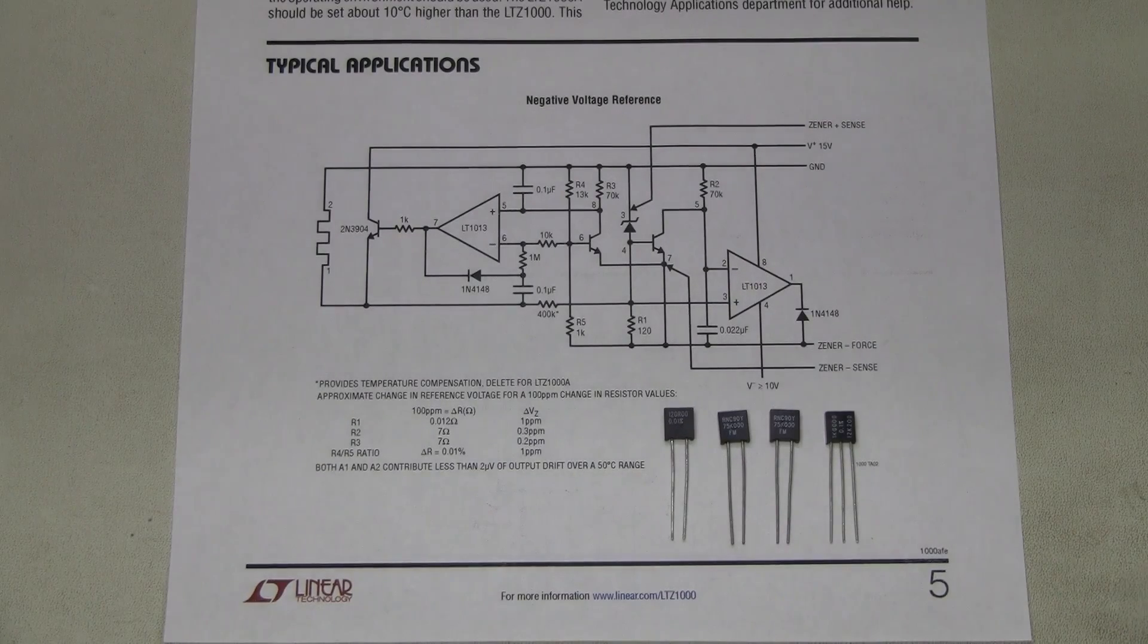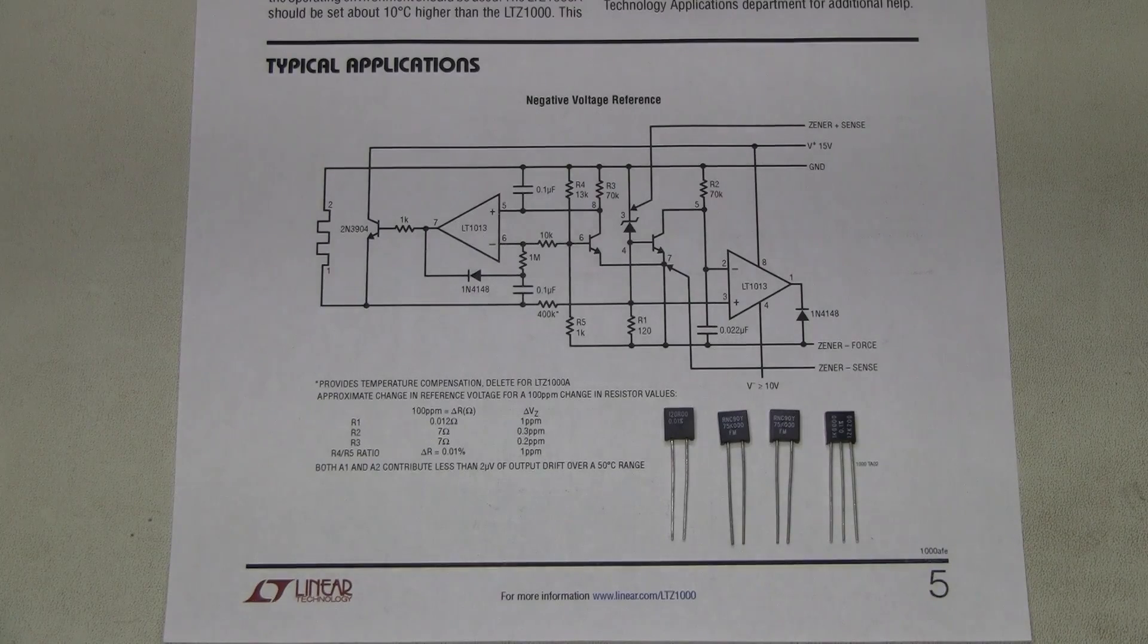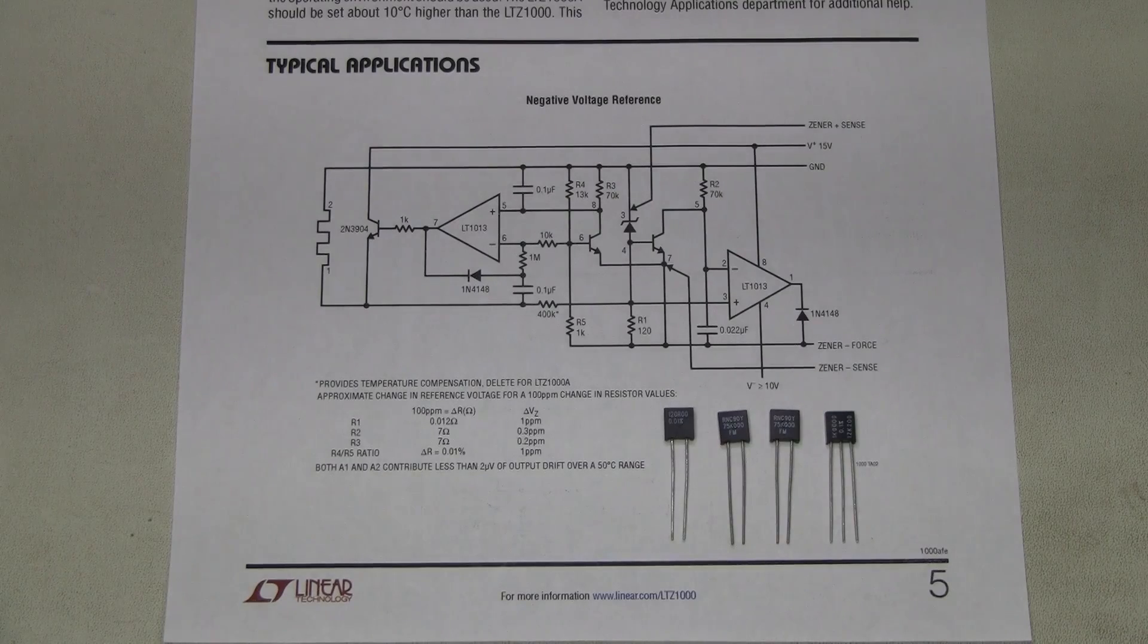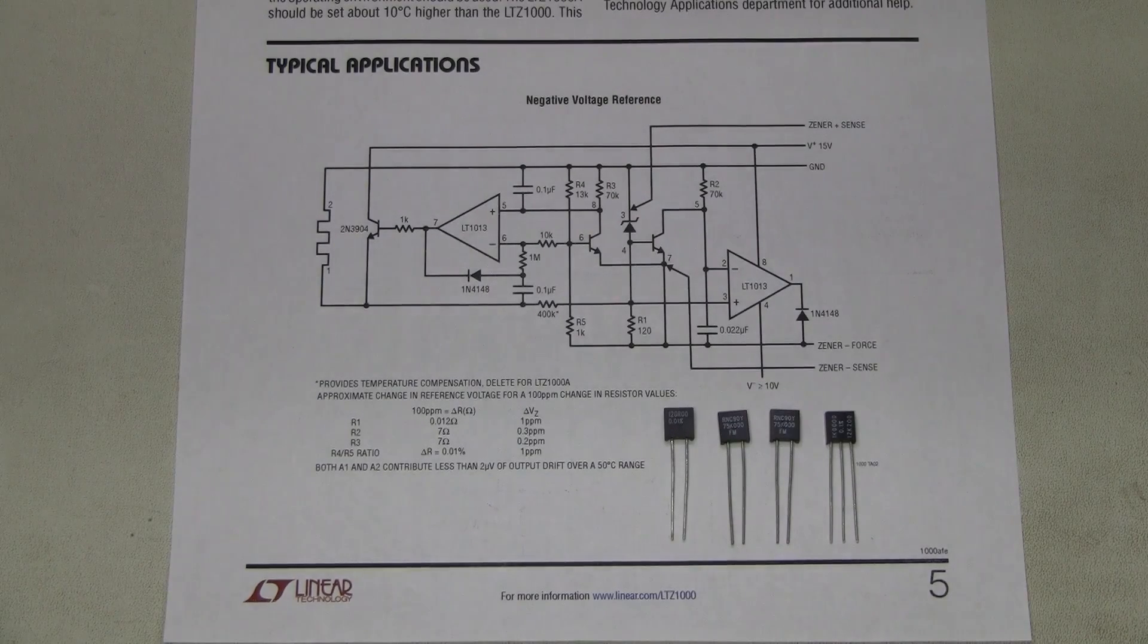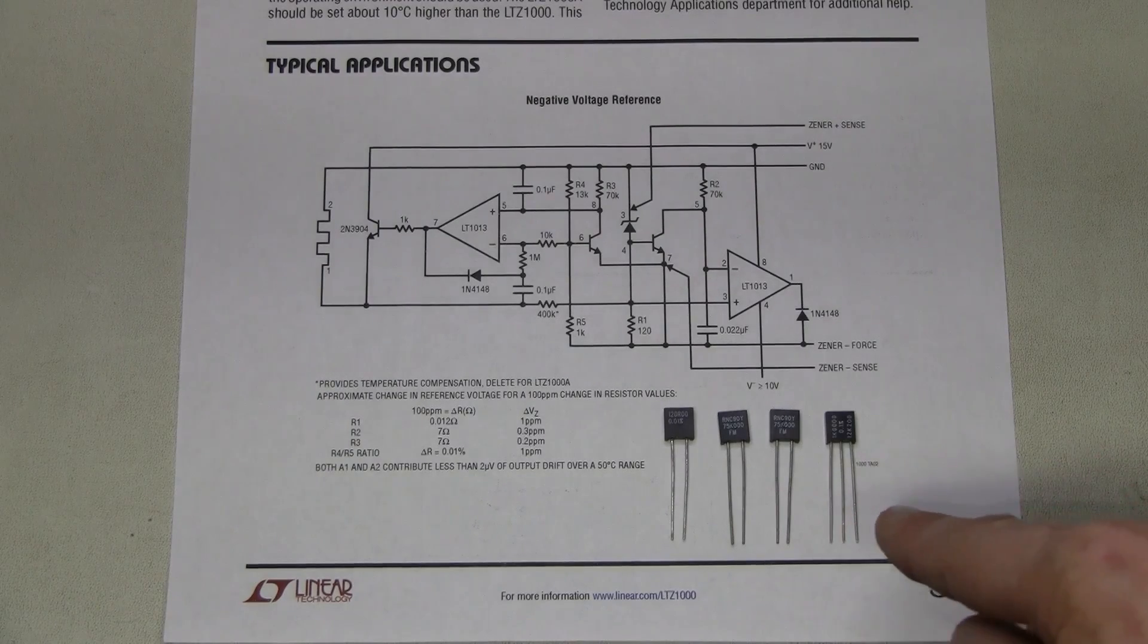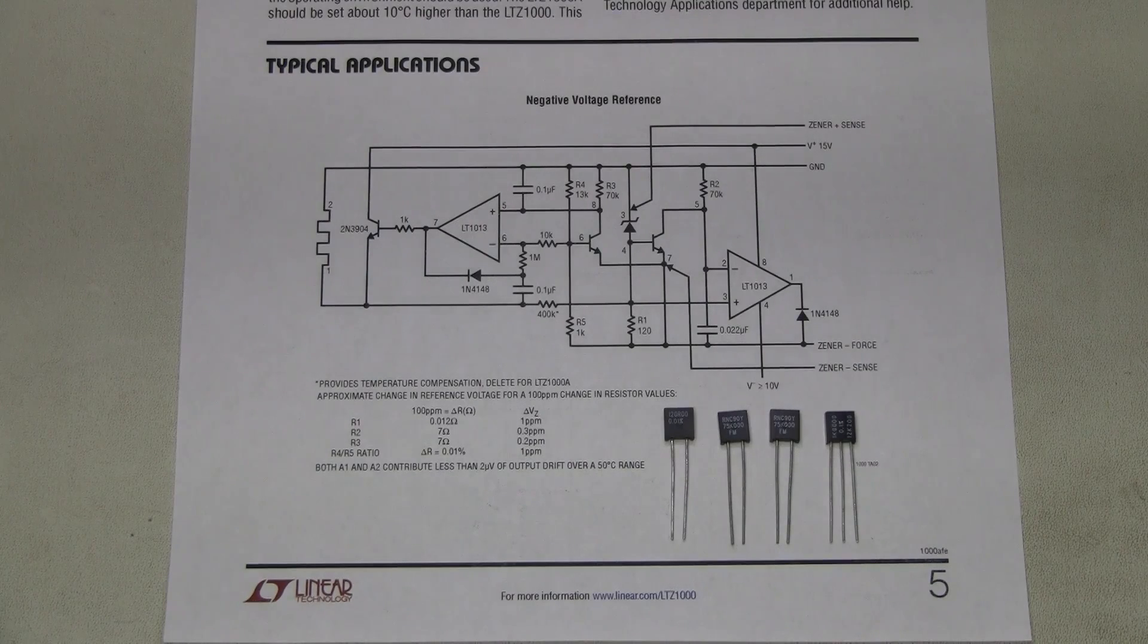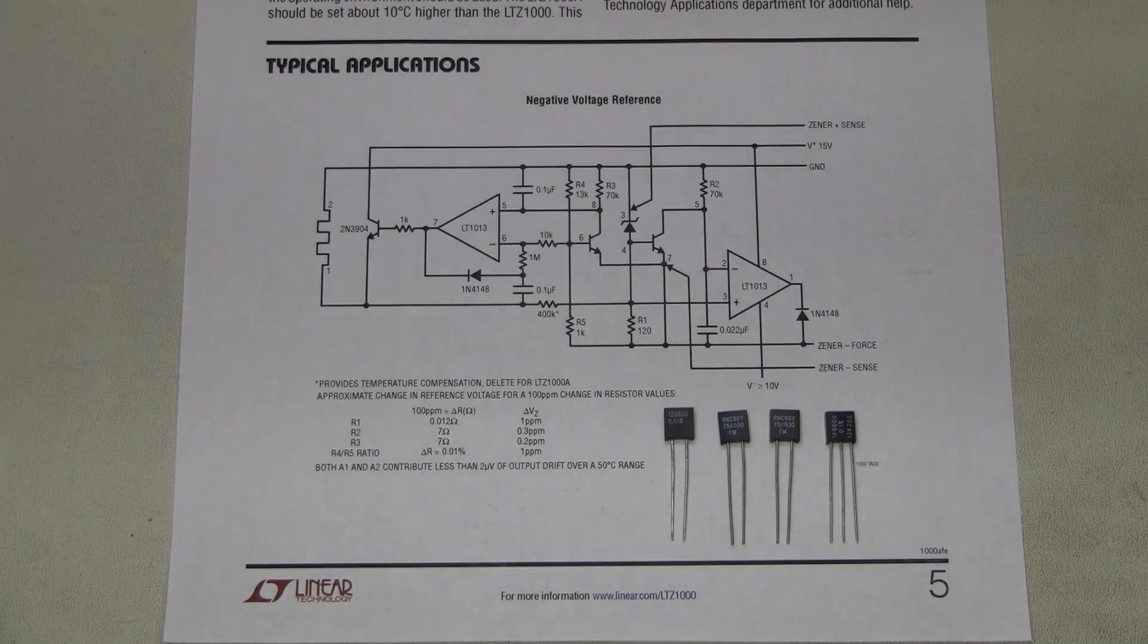The resistors should be stable to, let's say, a few ppm a year and under 2 ppm per degree C temperature drift. The resistors in one package should track each other within 1.5 ppm per degree C and also something like a few ppm a year aging.